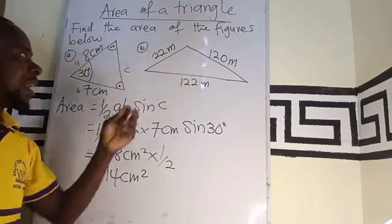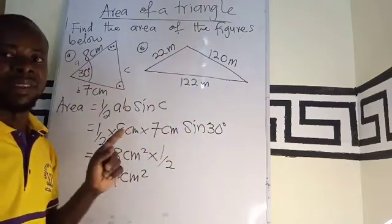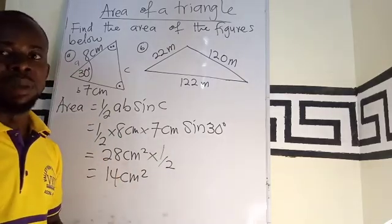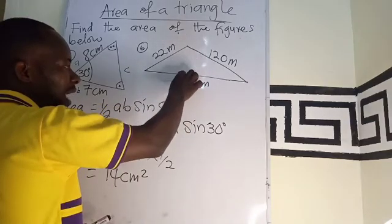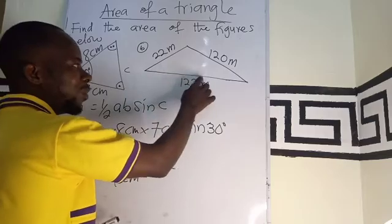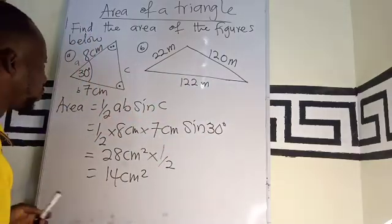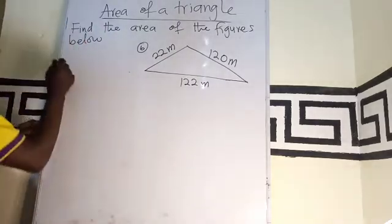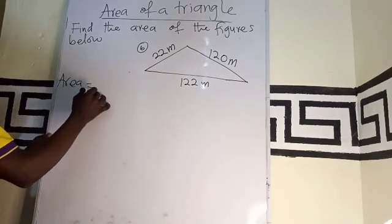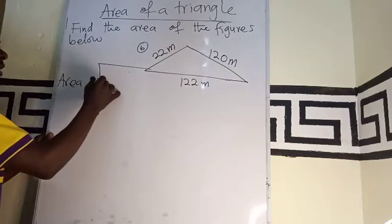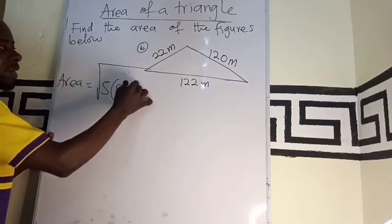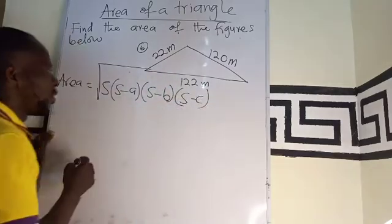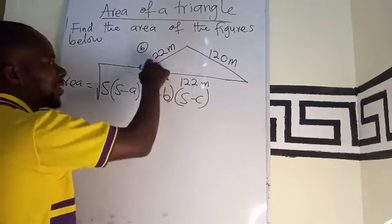This is also a scalene triangle, but in this case all the sides are given but no angle, so following this method won't work. We can't use half base times height because if I draw this line, I cannot say that the length here will be the same. So we can use Heron's formula, where area equals the square root of s times s minus a times s minus b times s minus c, where a, b, c are just the sides.